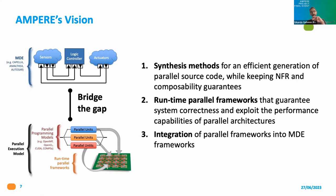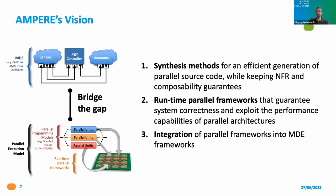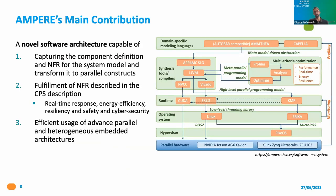The AMPER project has been working on three main lines. The first is code synthesis methods: given a description of the system in some domain-specific modeling language, we can efficiently generate the corresponding parallel source code while including all non-functional requirements. We have also been working on runtime parallel frameworks that allow exploiting performance capabilities while guaranteeing system correctness. The third axis involves implementing all of this into a real model-driven engineering environment.